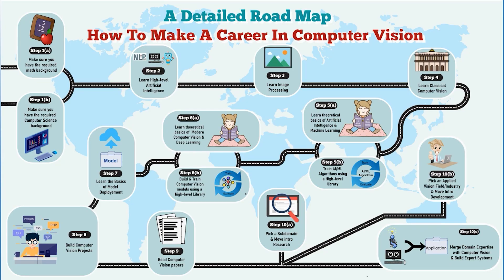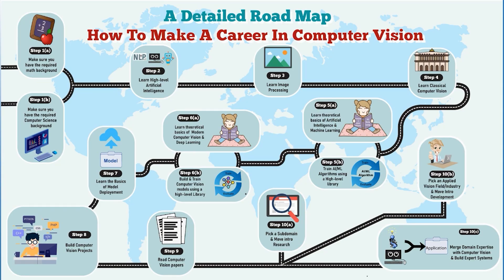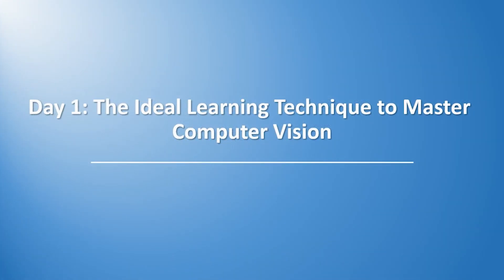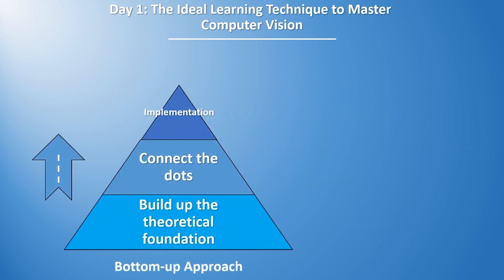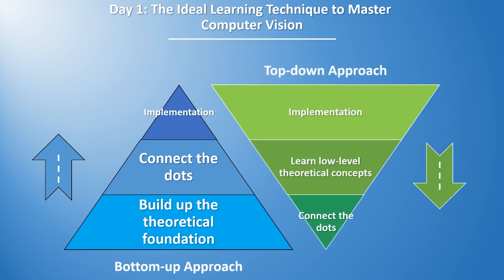Here's a quick summary of what we'll be covering in this course. On day one, we'll go over the ideal learning technique to master computer vision. I'll talk about two approaches: the bottom-up approach and the top-down approach. The bottom-up approach is used by universities — they build the theoretical foundation first, then move on to more practical stuff. The top-down approach is more practical when learning applied AI.